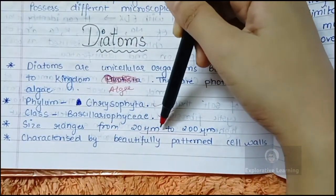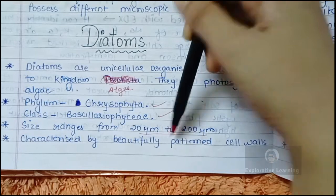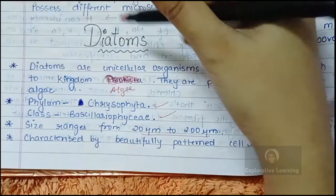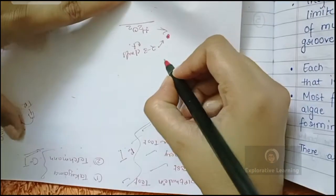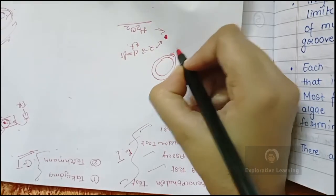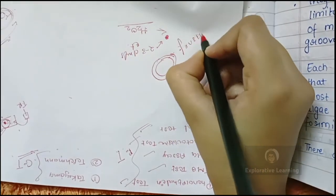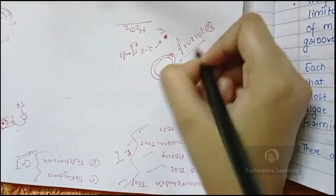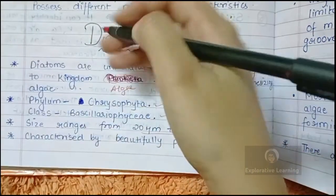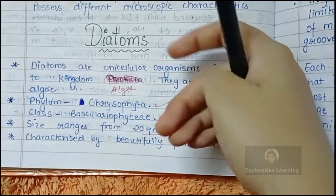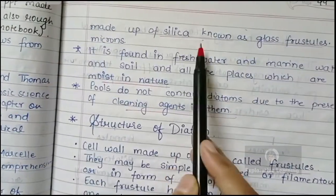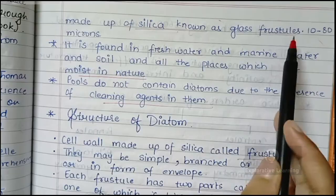Diatoms belong to the phylum Chrysophyta and the class Bacillariophyceae. The size of a diatom can range from 20 micrometers to 200 micrometers. They are characterized by beautifully patterned cell walls termed as frustules. These frustules are beautifully structured cell walls, similar to how plants also have a cell wall.